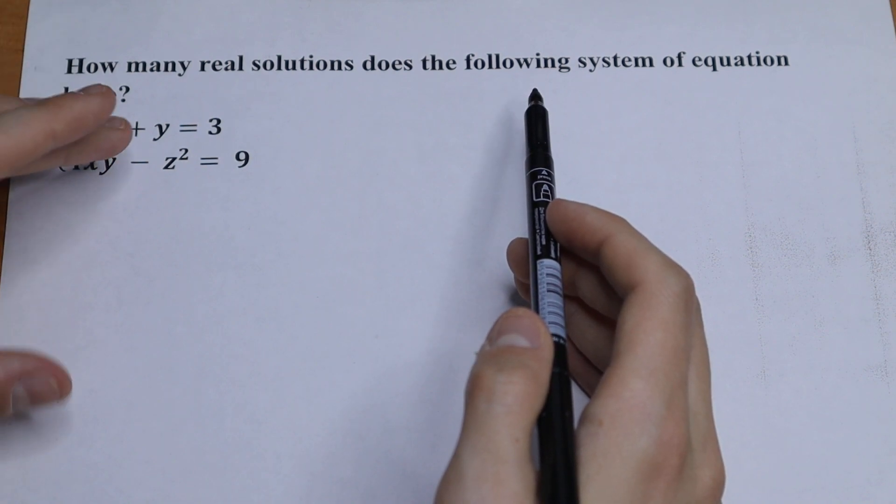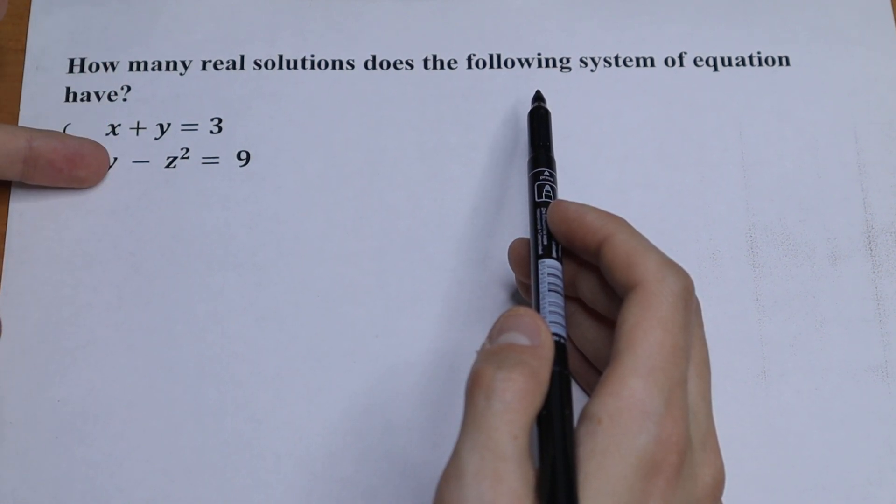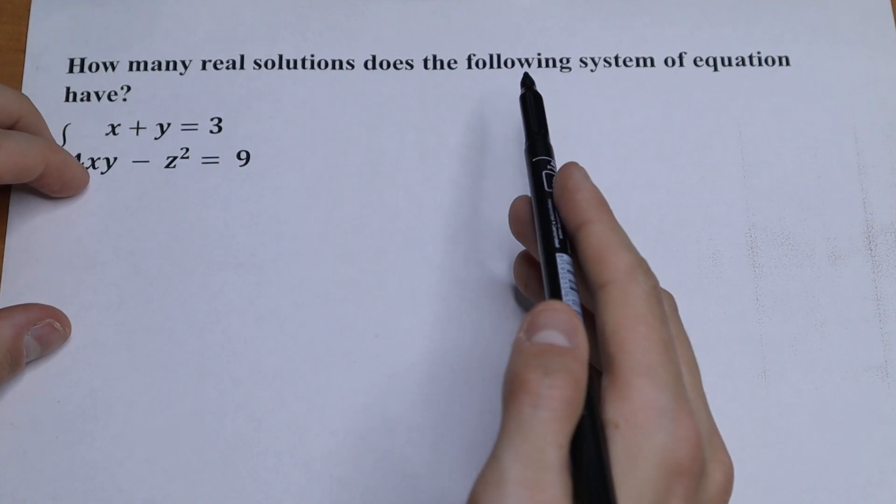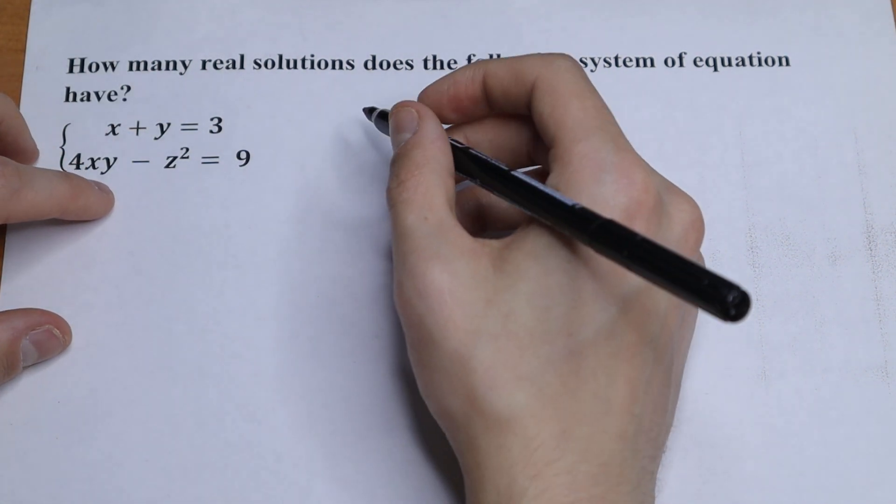On the first sight, this system of equation is really hard because we have two equations, but we have three variables: x, y, and z. How can we solve it? I want to suggest you a really good trick how to solve it.